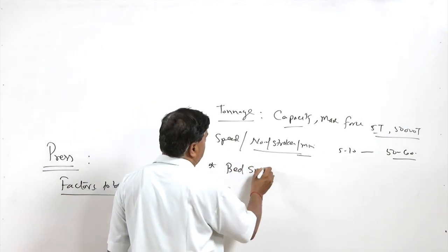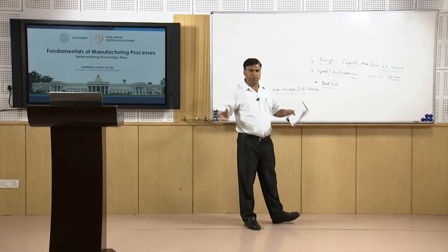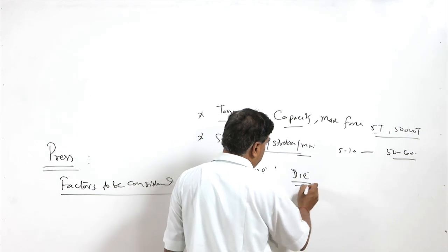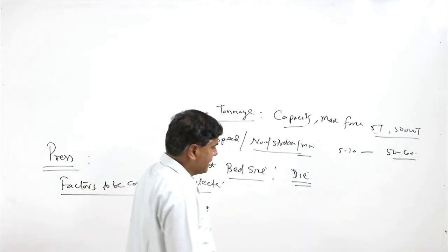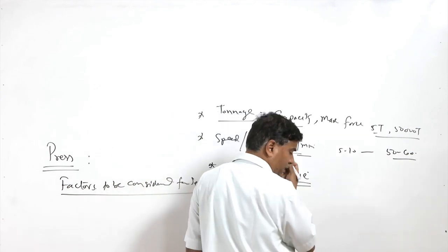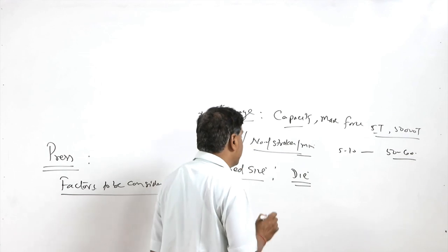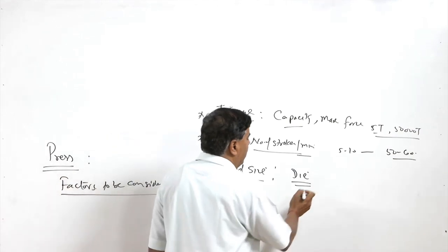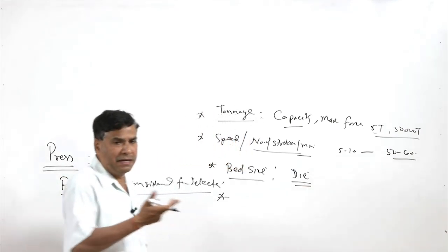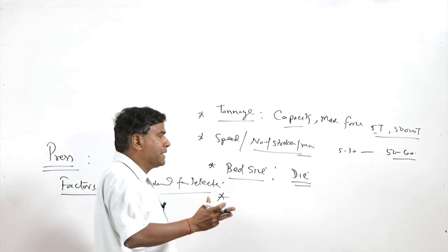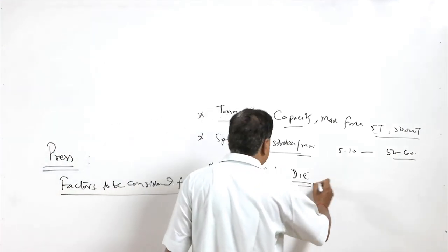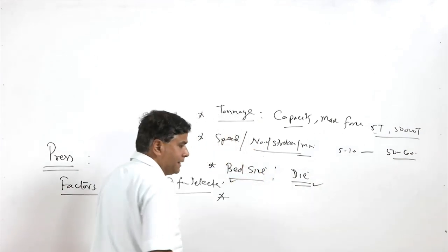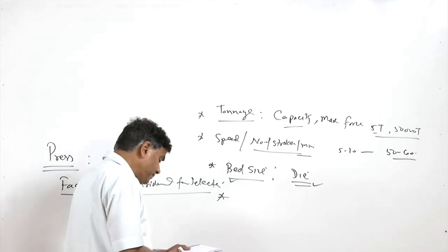Another factor is bed size. As per the size of the job or component which is to be made, we need to use a suitable die. The die will be placed on the bed of the press, so the press must have sufficient space for accommodating the die. The bed area or bed size governs the size of the product that can be produced, and the die must be accommodated into the bed of the press accordingly.